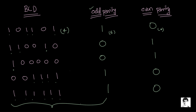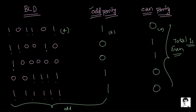The basic thumb rule is: when using odd parity, the parity bit we add should make the total number of ones in the binary word odd. When using even parity, the total number of ones including the parity bit should be even. That is the thumb rule.